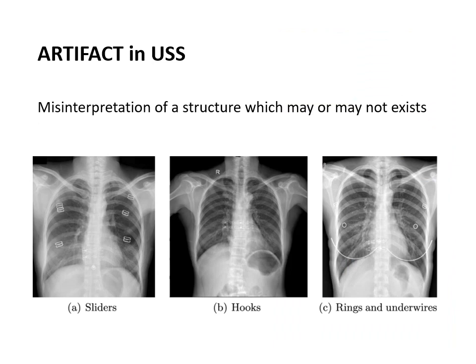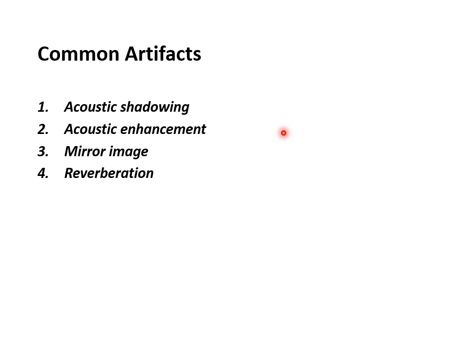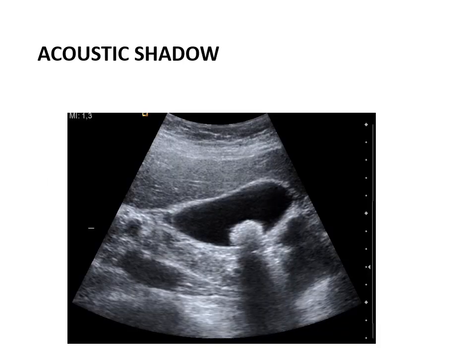Artifacts in ultrasound are similar to artifacts in X-rays or CT scans — they give a false impression of something that doesn't exist, or misinterpretation of a structure. However, artifacts in ultrasound are not always a nuisance as in X-rays and CT, because they can help differentiate between structures. Four commonly encountered artifacts are: acoustic shadow, acoustic enhancement, mirror image, and reverberation. Acoustic shadow is a shadow to sound waves — when sound waves cannot pass through a structure, they leave a shadow. For example, in the gallbladder, a hyperechoic structure leaves a shadow behind it — that is acoustic shadow.